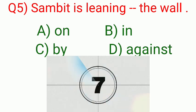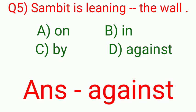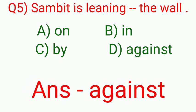Sambit is leaning dash the wall. The right option, against. Sambit is leaning against the wall.